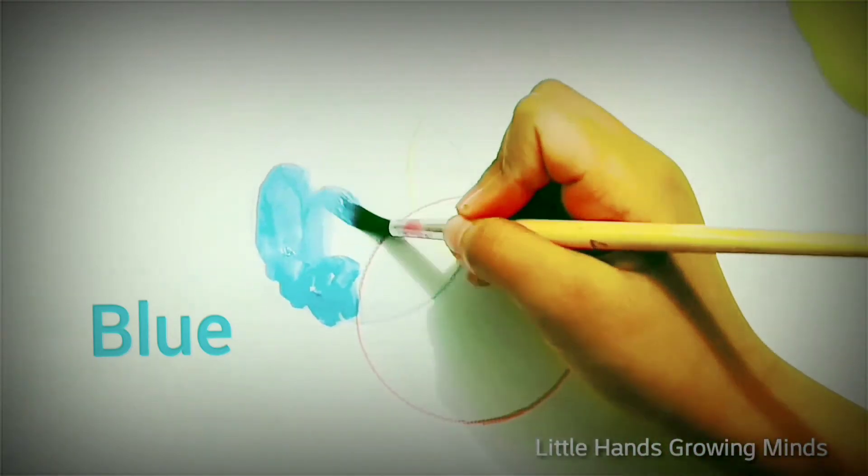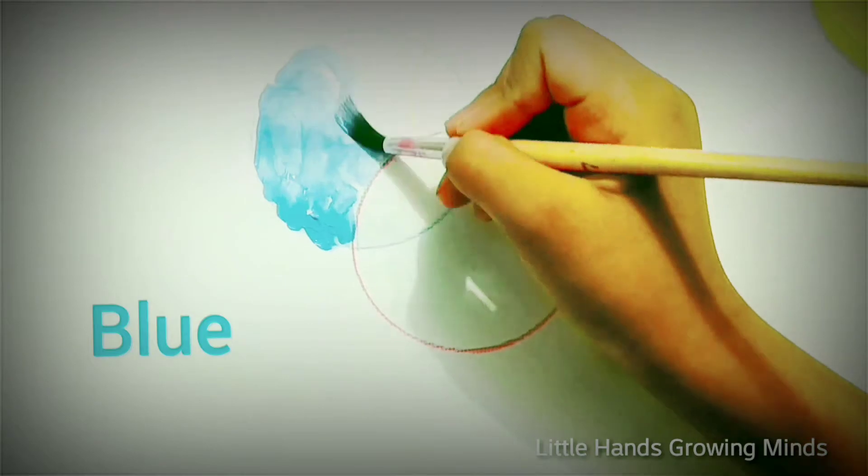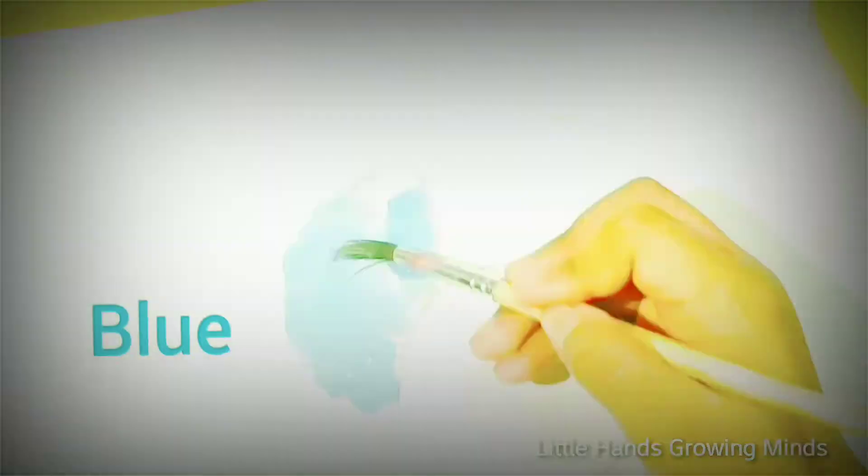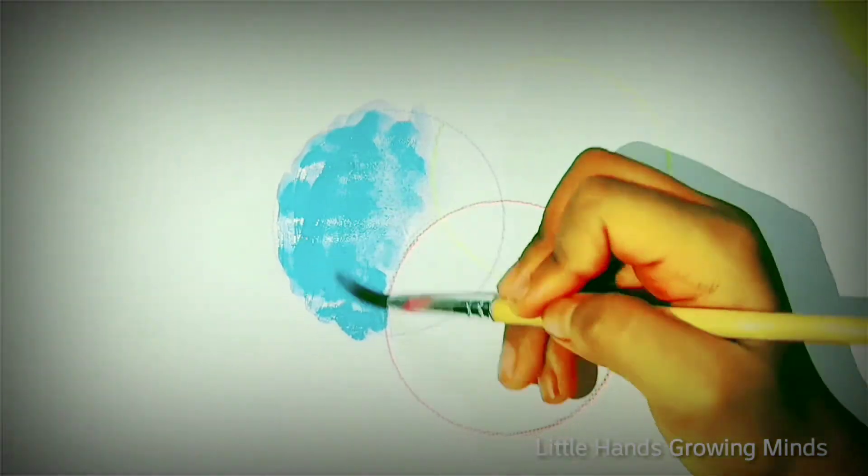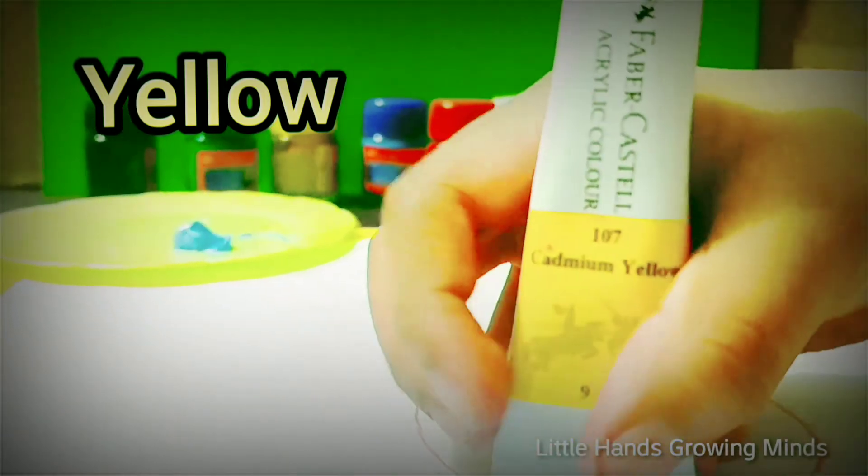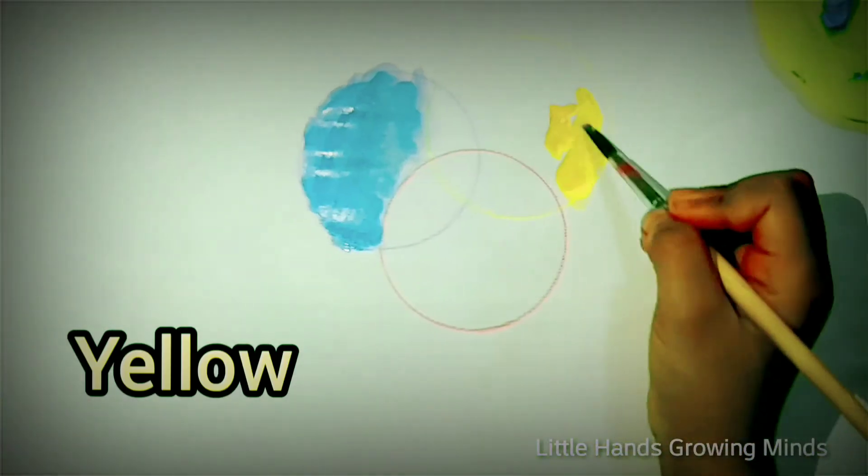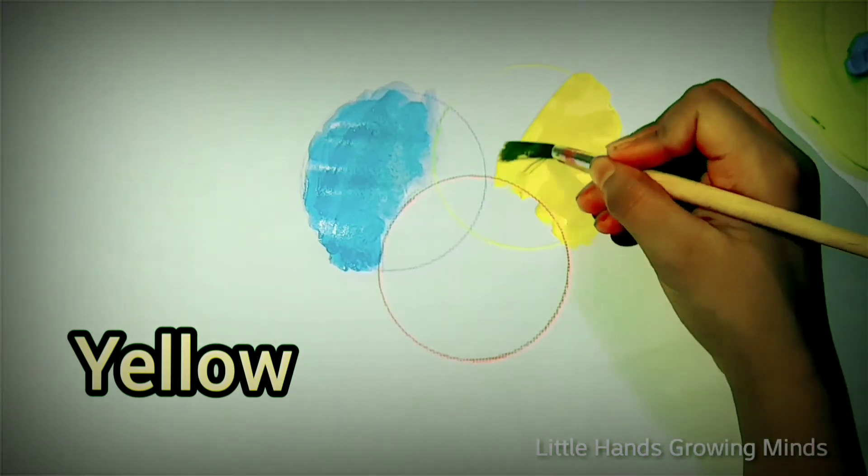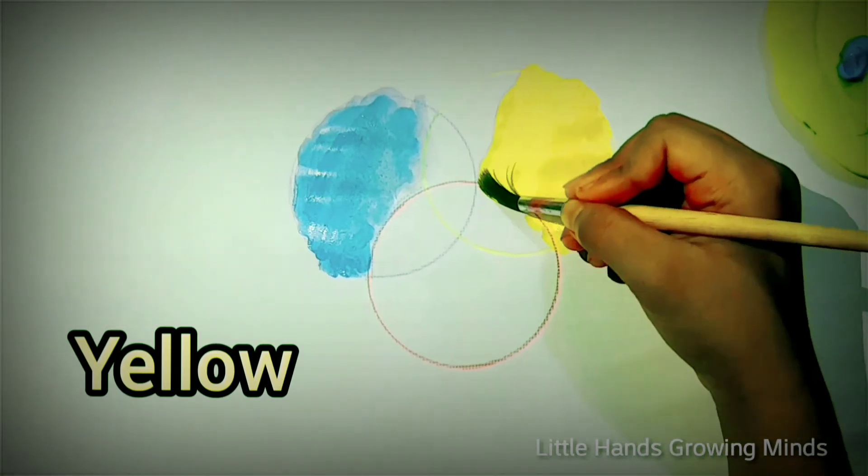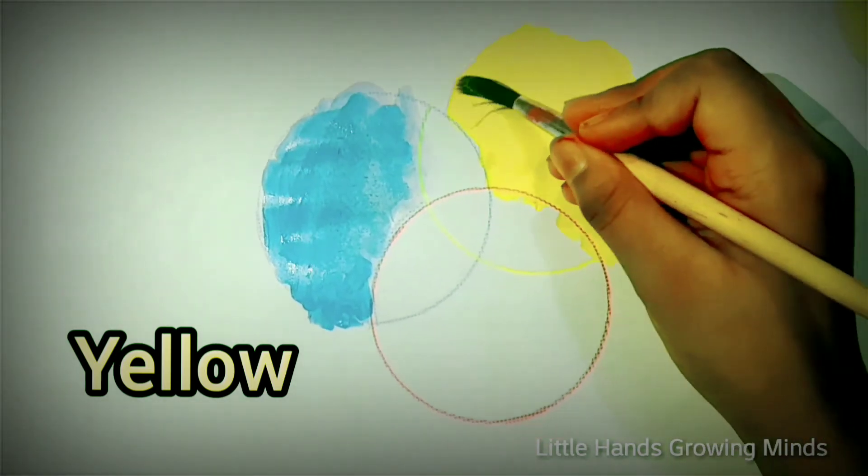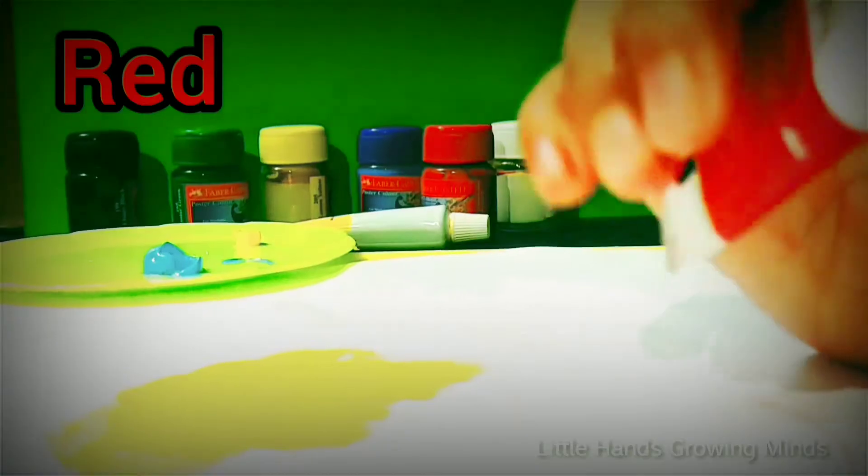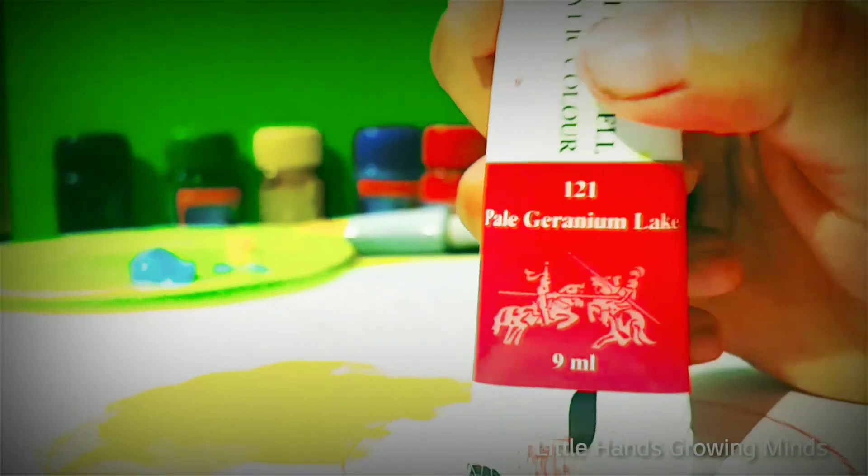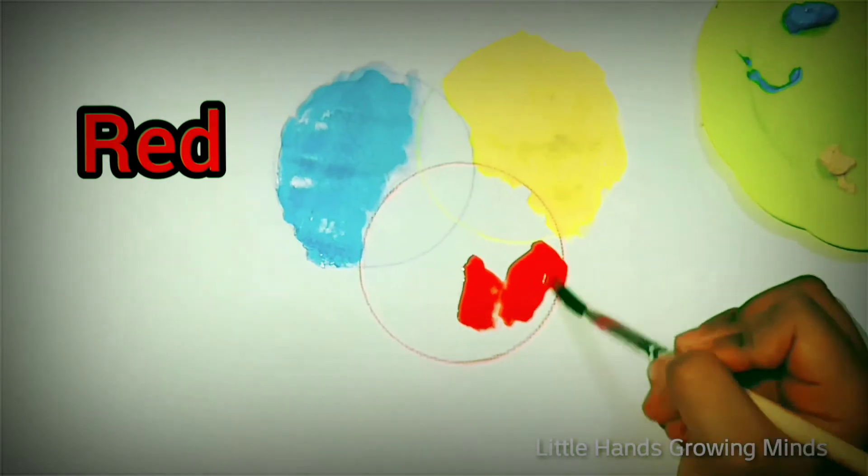First we can color with blue. Now we can use yellow. The third primary color is red. Now we can color with red.